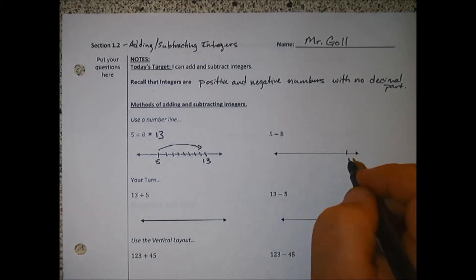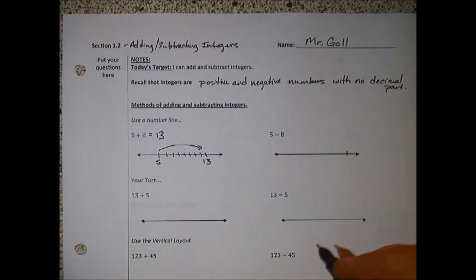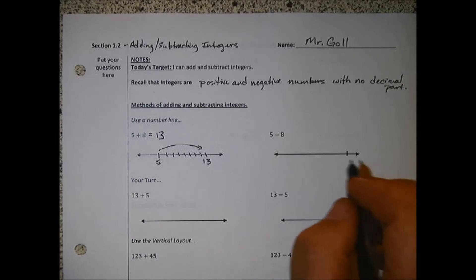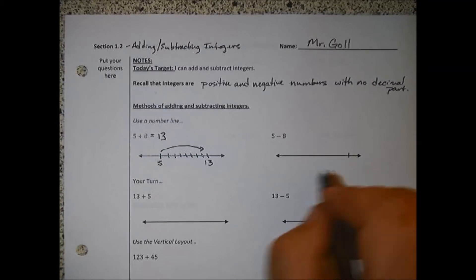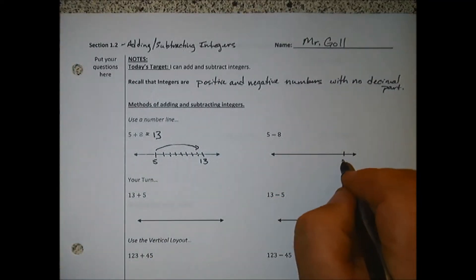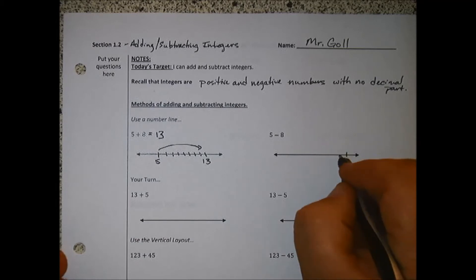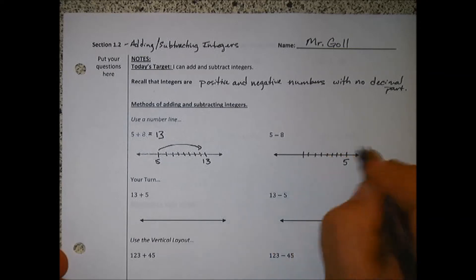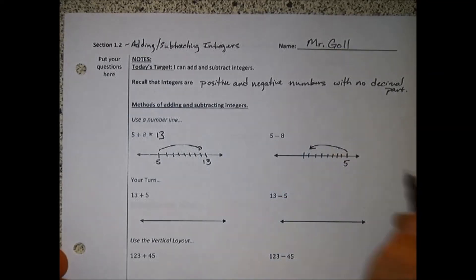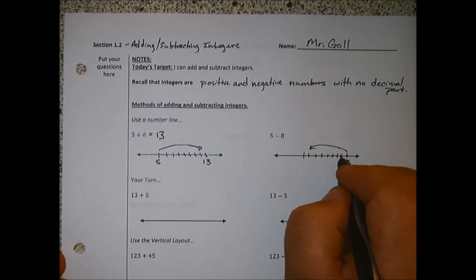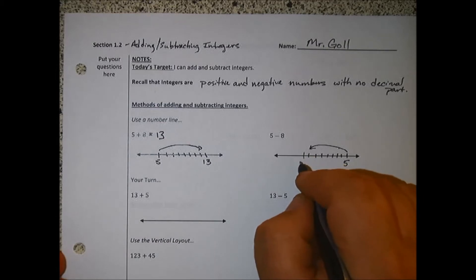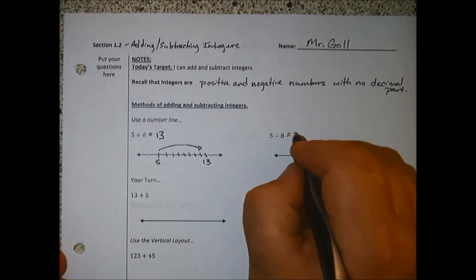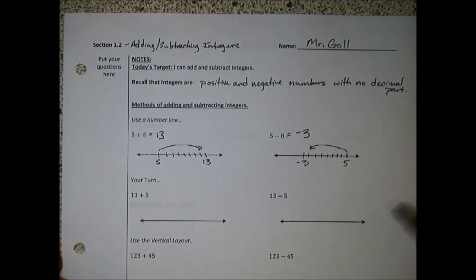Here I have 5 minus 8. When I add I go to the right, when I subtract I go to the left. We're going to start here and go to the left 8 spots: 1, 2, 3, 4, 5, 6, 7, 8. Let's count out what it would be: 4, 3, 2, 1, 0, negative 1, negative 2, negative 3. So I made it to negative 3. That's my answer.